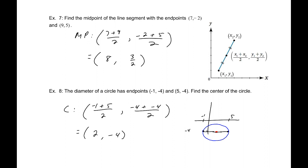Which makes perfect sense because the diameter lies, if you notice the y values are both -4, so of course the center of the circle is going to lie on that same line. That brings us to the end of this section about the rectangular coordinate system.